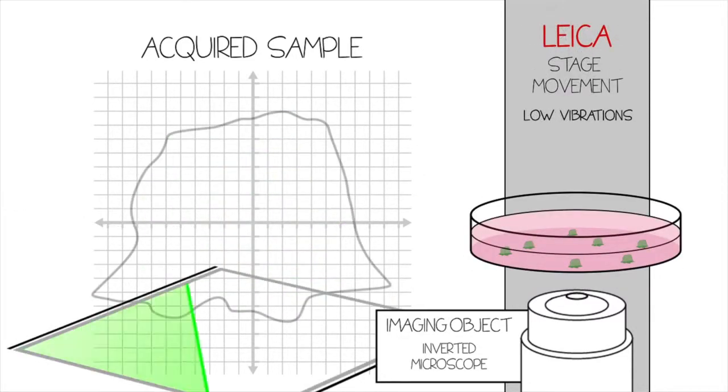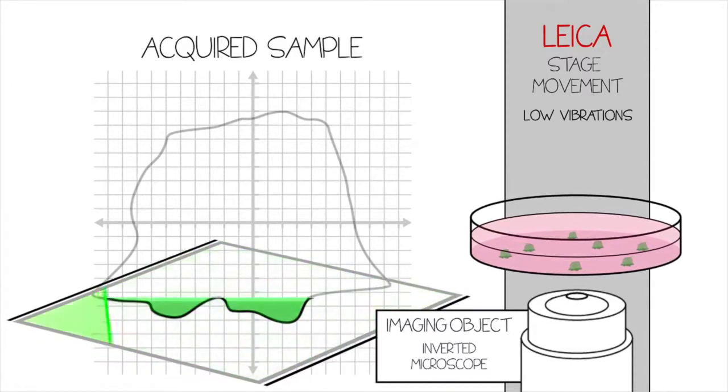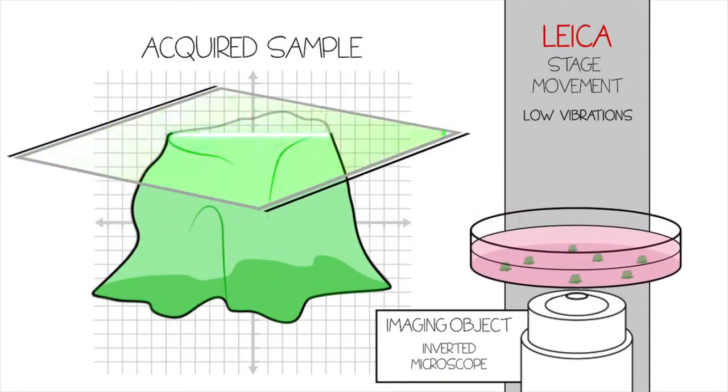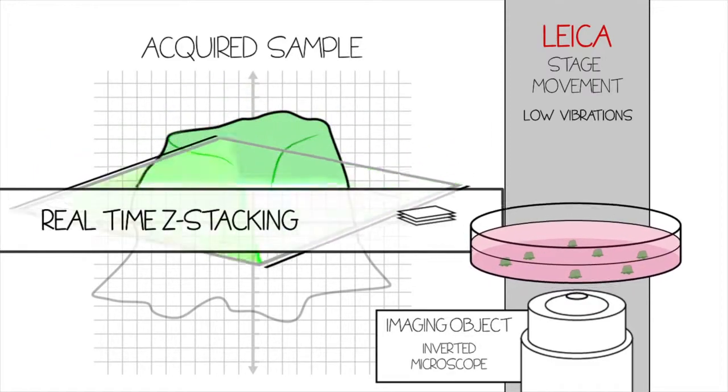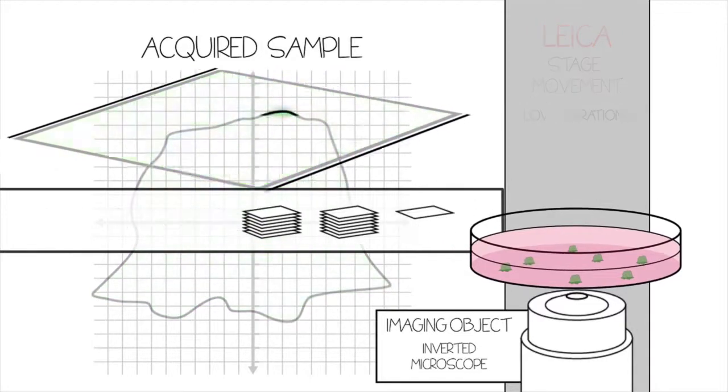Leica's Super-Z Galvanometric Stage operates in a mode called Galvo Flow to produce vibration-free 3D images. By eliminating settling time through the continuous movement of the stage, the Galvo Flow enables rapid real-time z-stacking.